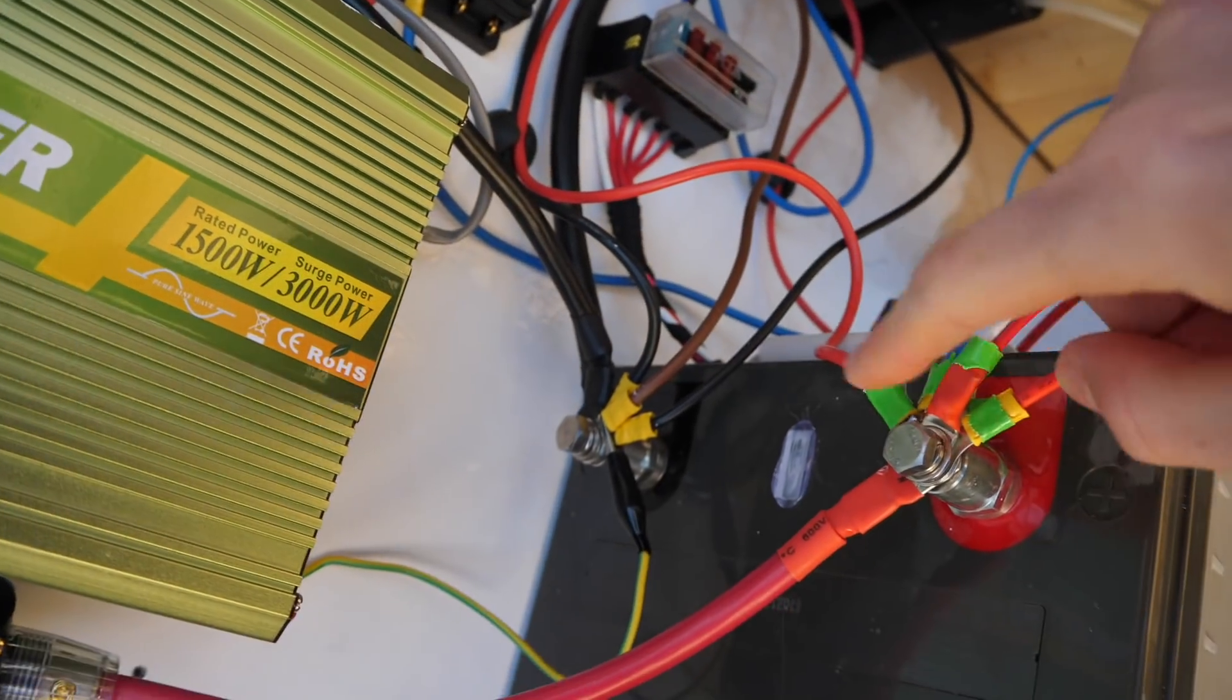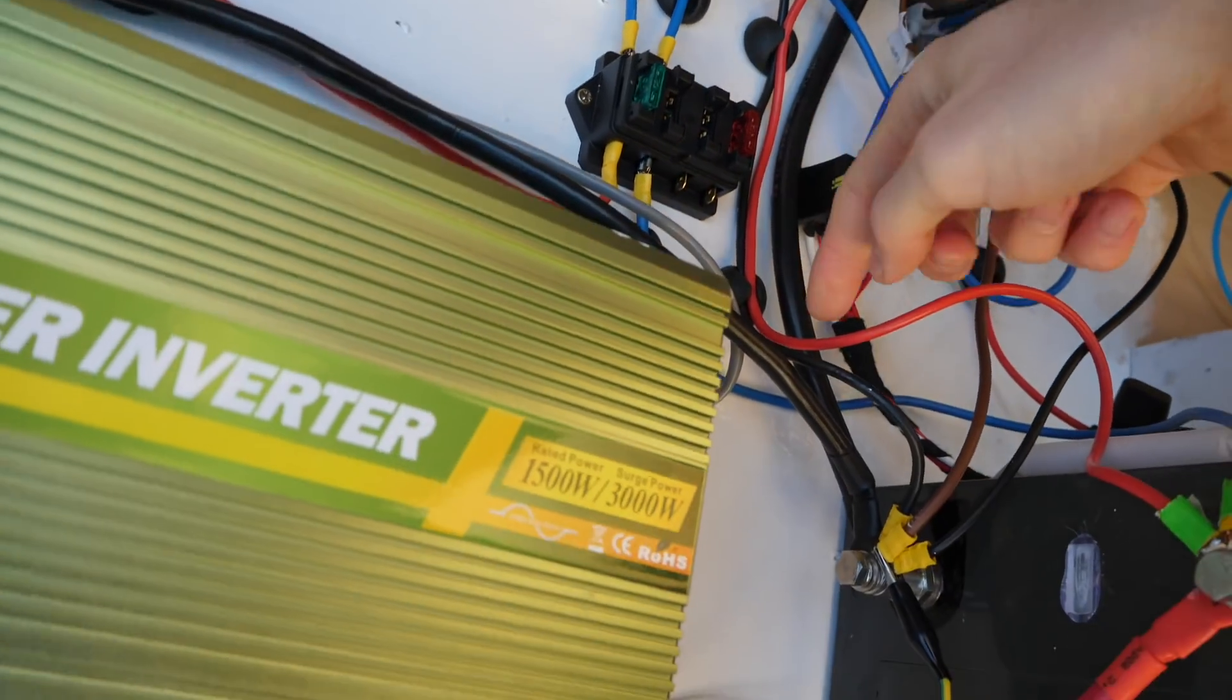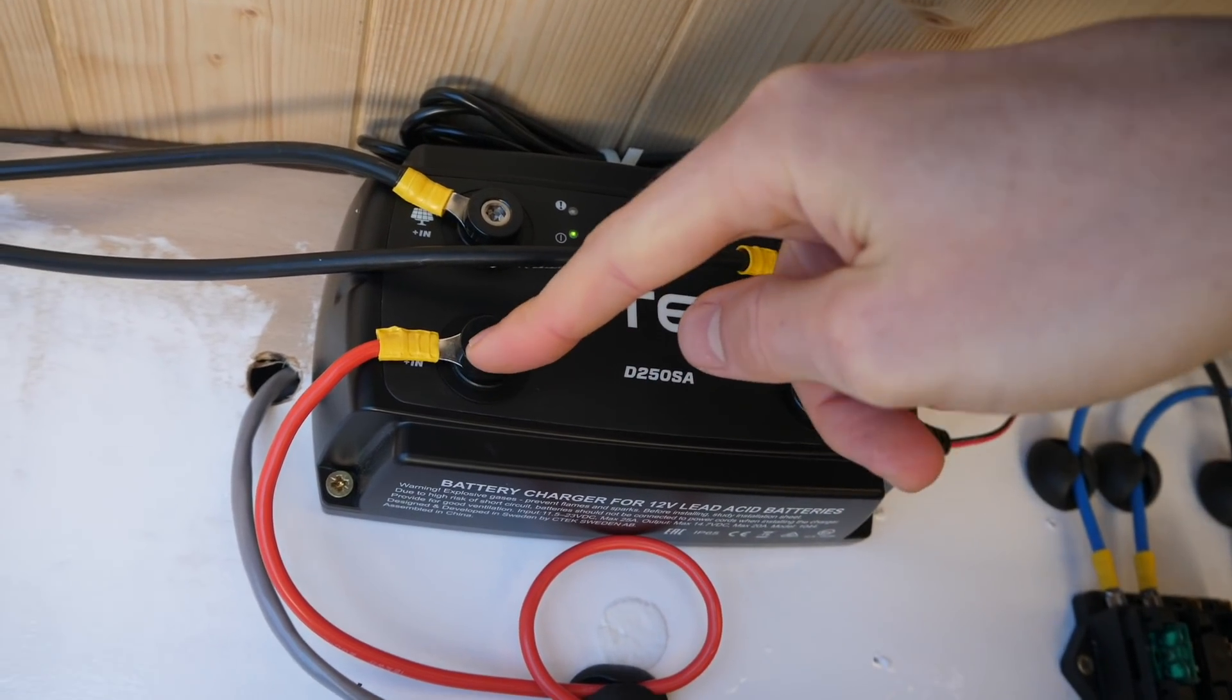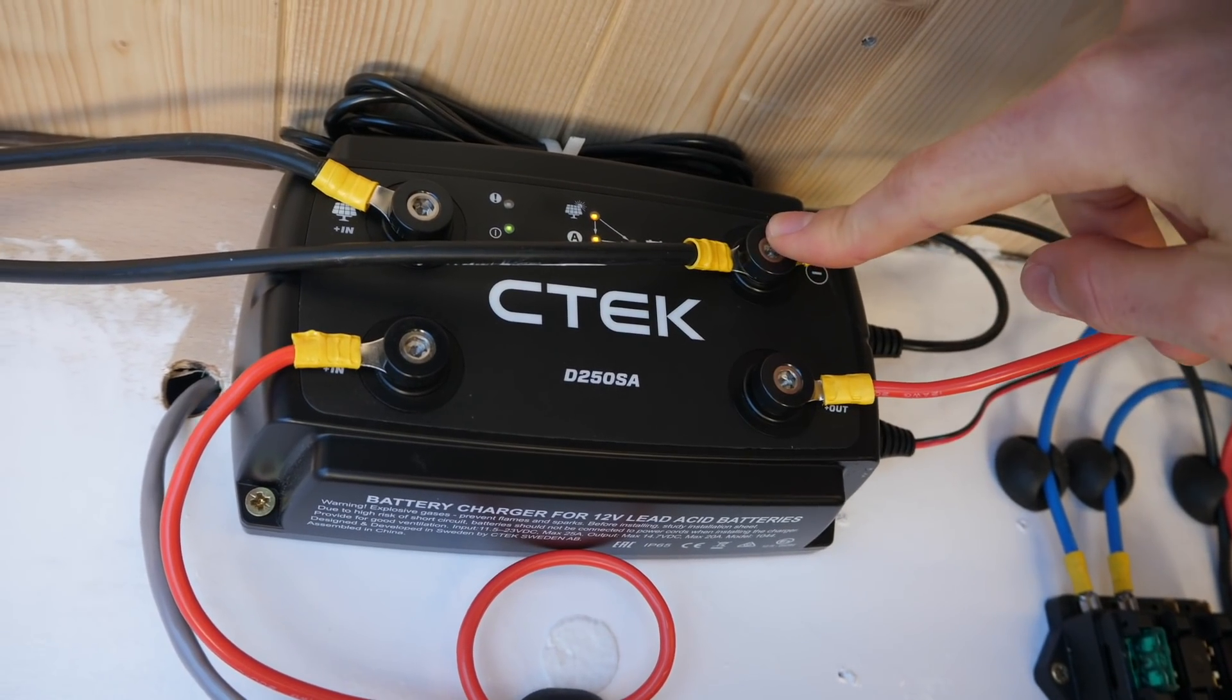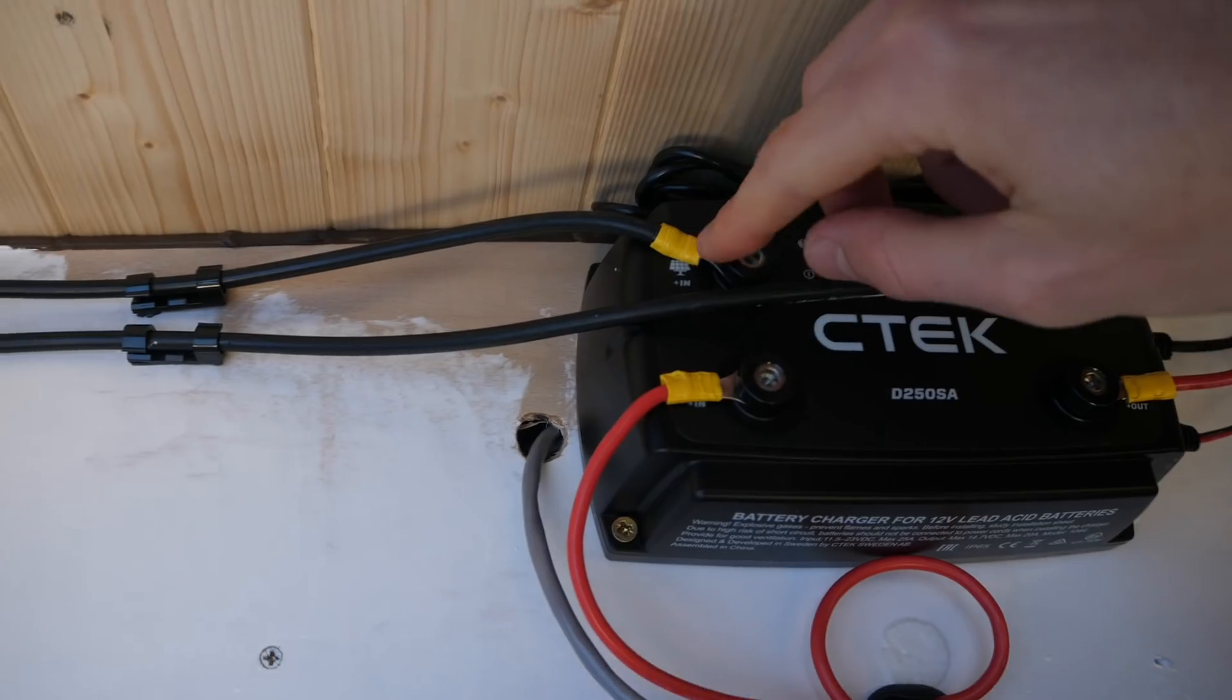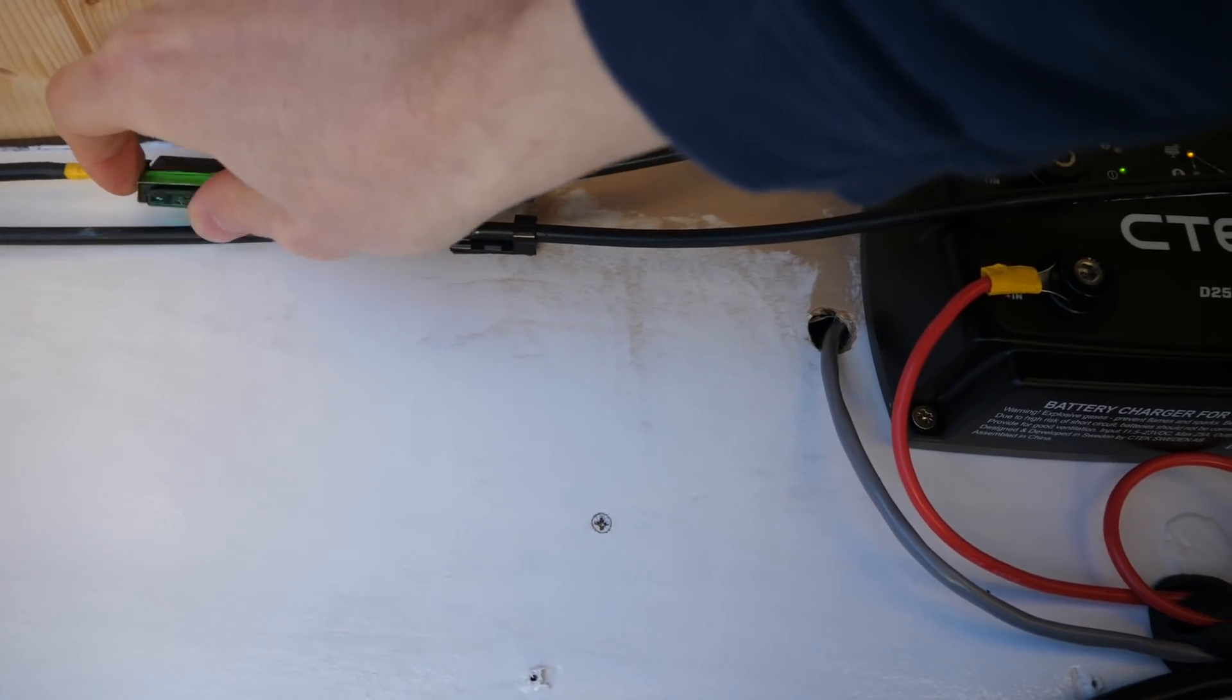And then the positive that is charging via a 30 amp fuse again, that is charging my leisure battery, is going to my leisure battery. And then this negative is also going to the negative terminal on my leisure battery. Positive in from the solar, positive in from the starter battery or smart alternator, negative from the solar panel, negative to my leisure battery, positive to my leisure battery via a 30 amp fuse. And remember the right amperage of fuse from your solar panel, which for me is 30.